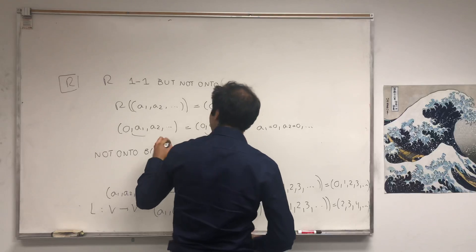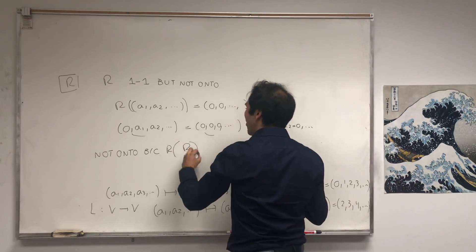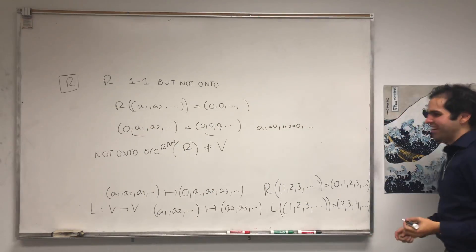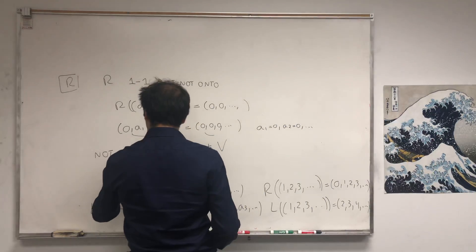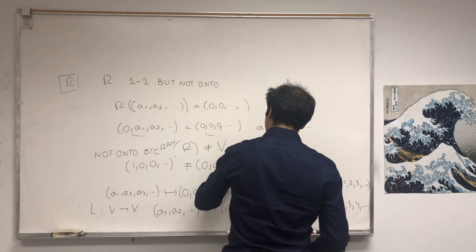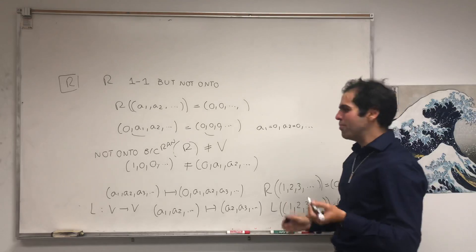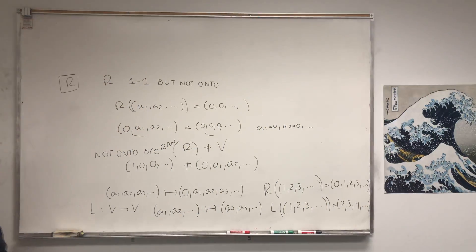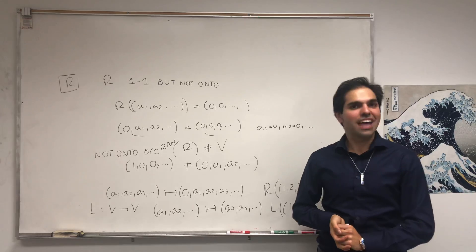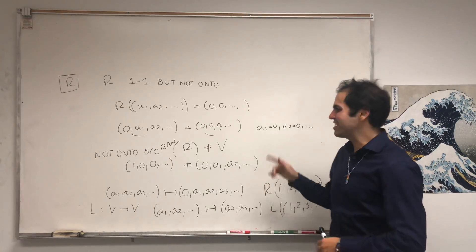The range of R is not all of V, because the vector one, zero, zero, zero, ... is not of the form zero, a1, a2, ... This is actually a very interesting example of a linear transformation that is one-to-one but not onto — which is strange, because there's a theorem saying that if the input and output spaces have the same dimension, one-to-one is equivalent to onto. But this is only true for finite dimensions, so be very careful.